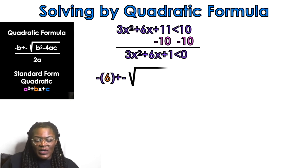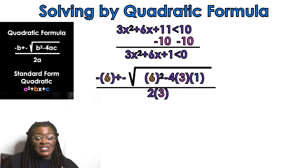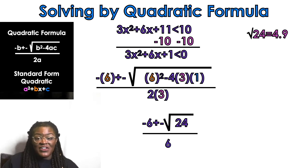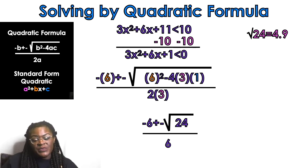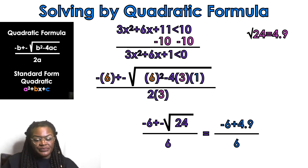Plugging in: negative 6, plus or minus the square root of 6 squared minus 4 times 3 times 1, all over 2 times 3. That gives negative 6 plus or minus the square root of 24. Using PEMDAS under the radical — the square root of 24 is approximately 4.9. Now we separate into the plus case and the minus case.